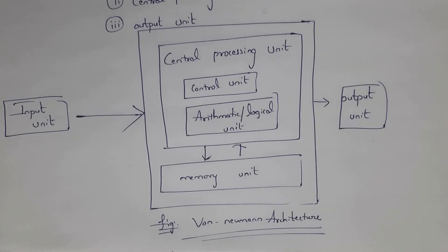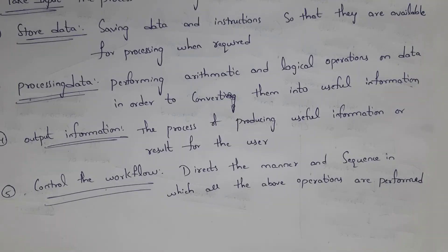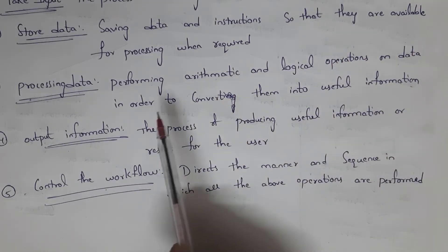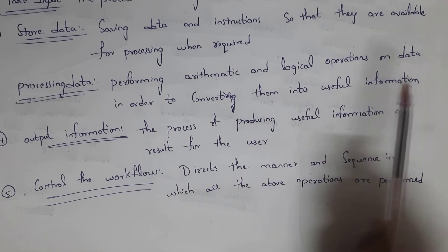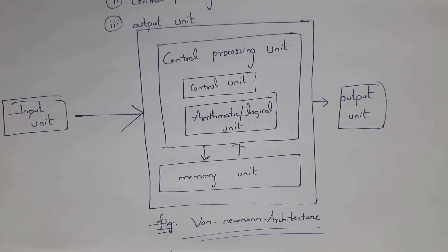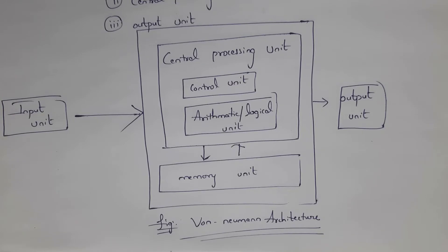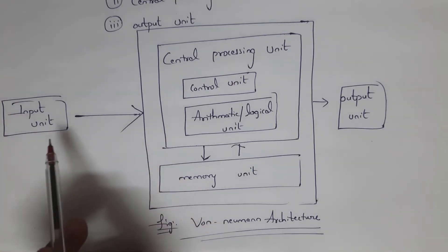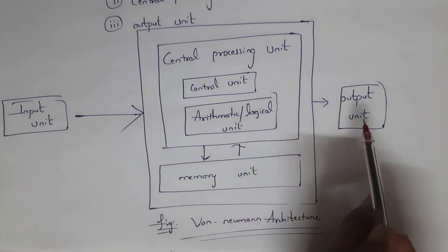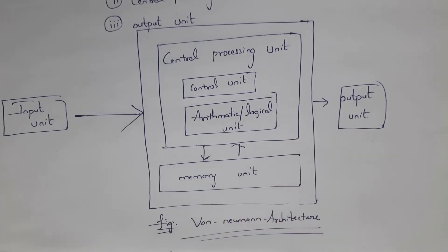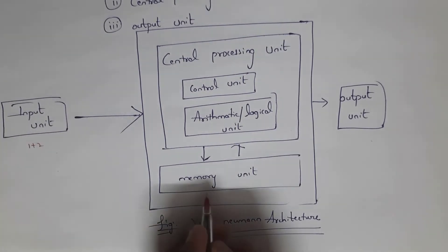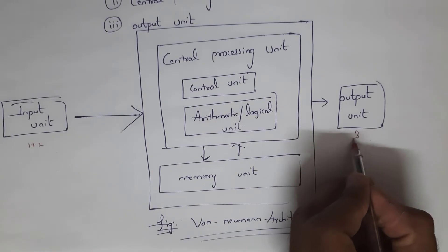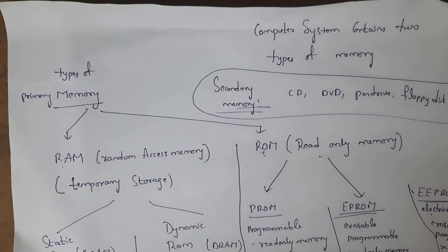The arithmetic and logical unit handles data processing tasks such as performing mathematical calculations and logical operations on data to convert them into useful information. The memory unit stores whatever input the user provides to the system, as well as the output. For example, if I give input like 1 plus 2, this input is stored in the memory unit, and the output result 3 is also stored in the memory unit.